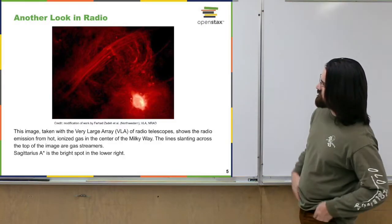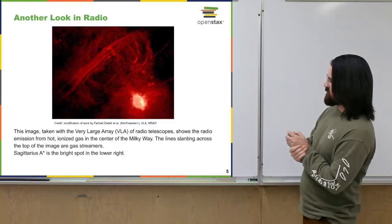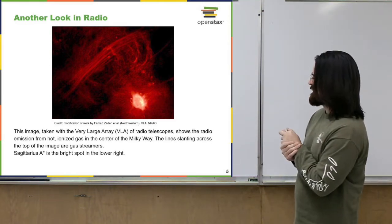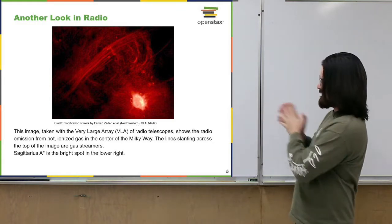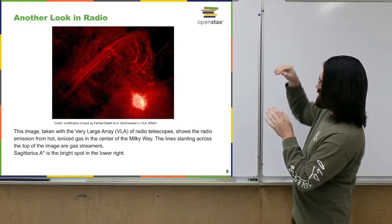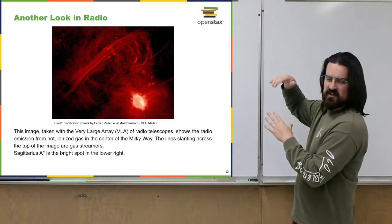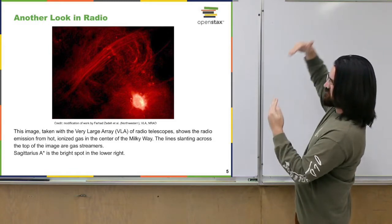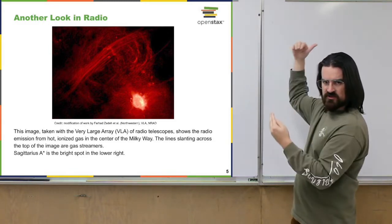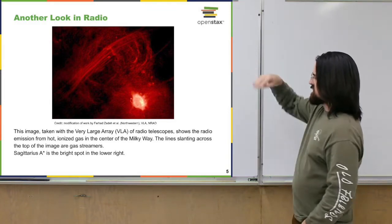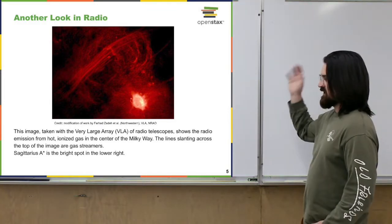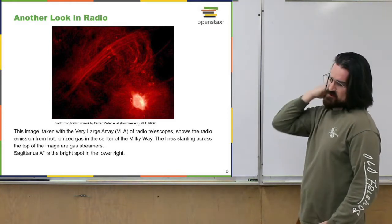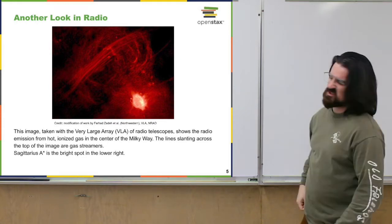This is another look right around the center in the radio portion of the spectrum. The really bright area is Sagittarius A*, a very strong emitter of radio waves. Another interesting feature visible in the radio image are what they call gas streamers — big streams of gas. The book doesn't talk too much about these features, and honestly not a lot is known about them.